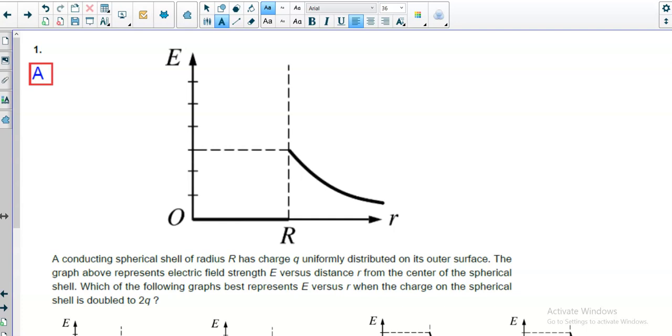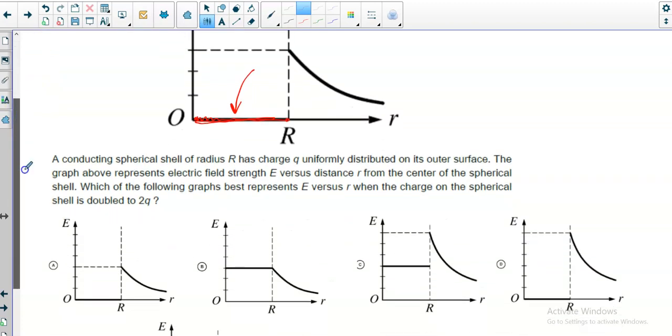Inside the shell, you have a conducting shell with charge on it. The charge will evenly distribute to produce no electric field inside the charged conducting shell. None. And it doesn't matter how much charge is on it. So our answer needs to also have that along the bottom. The charge will arrange itself so that there is no net field inside the shell.